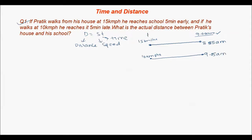In both cases, the speed is changing but the distance is the same — same distance from his house to school. There is a time difference of 5 minutes in each case, so the total time difference is 10 minutes. We can write t2 minus t1 equals 10 minutes: when traveling at 15 km/h versus 10 km/h, the total time difference is 10 minutes.